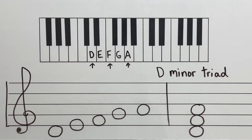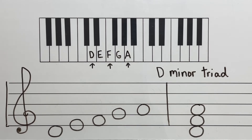Before I teach you how to create a D minor triad, I want to talk about how minor triads sound. If you have a chance, go to the piano and play some of these minor triads. You're going to notice that they sound a different way. I think about major triads as sounding happy. When you play a minor triad, it might sound a little sad to you, or maybe a little mysterious. Minor triads definitely have a different sound to them.